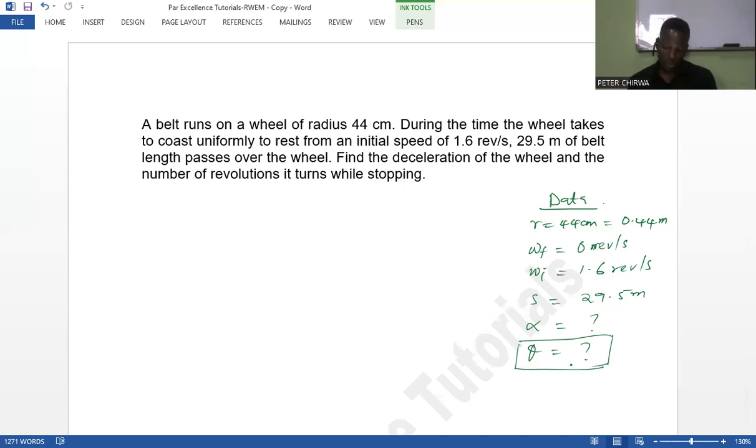Now remember that there is a relationship between the arc length and the angular displacement. We have angular displacement being equal to arc length over the radius. So this is going to be 29.5 meters over 0.44 meters, which is going to give me 67.05. Remember the SI units here are radians.